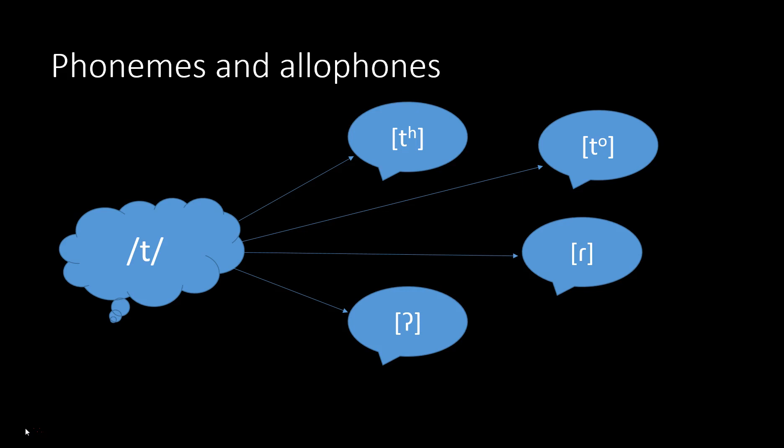A phoneme is represented in forward slashes. I know before that you thought of that as just broad transcription — erase that from your mind. The forward slashes do not represent actual sounds in the world. Instead, the forward slashes represent a mental reality. That's why I have them in the thought bubble here. That's what your mind thinks of as these various sounds.